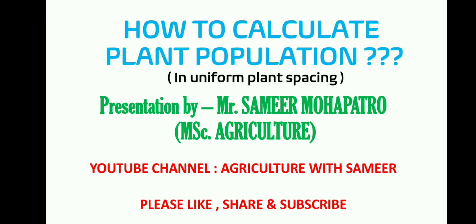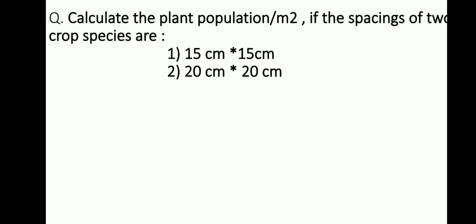Here is a question: how to calculate the plant population per meter square if the spacing of two crop species is 15 cm into 15 cm? In this video I will be explaining only about a single option, that is how to calculate the plant population per meter square.